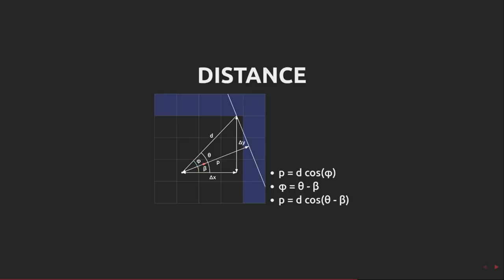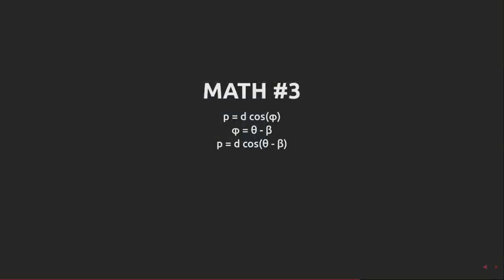Here's what we know so far. Now, again from grade school, remember the trigonometric identities. The cos of a minus b is the same as cos a times cos b plus sin a times sin b. Like many maths tricks, this seems more complicated than what we started with, but bear with me.